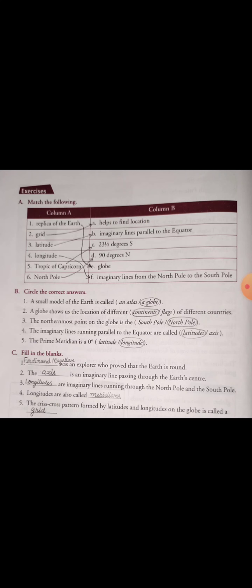A small model of the earth is called a globe — not an atlas. An atlas is a book of maps. A globe shows us the location of different continents — not flags. The northern-most point on the globe is the north pole. The imaginary lines running parallel to the equator are called latitudes, not axis. So the answer is latitude.